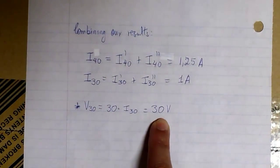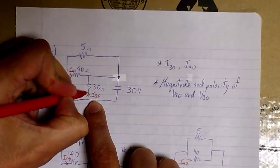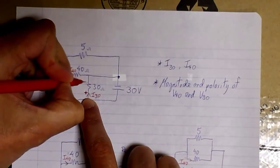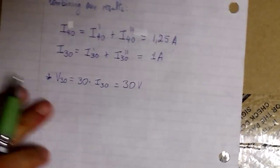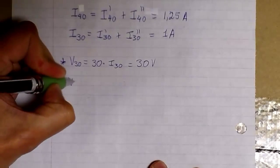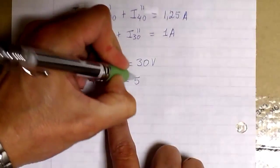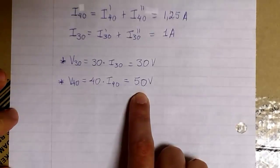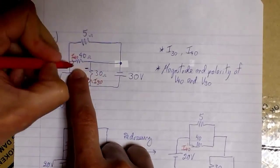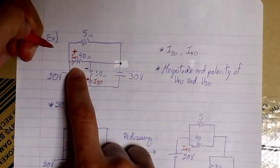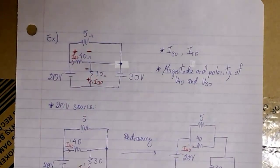Now we're looking for the voltage across 30. Applying Ohm's law: 30 ohms times I30 = 30 volts. To find the polarity, we go back to the original circuit — we have 1 amp flowing upwards through 30, so the top terminal is positive and the other is negative. For V40: 40 ohms times I40 = 50 volts. The current is flowing from left to right, entering the left terminal which is positive and leaving the right terminal which is negative. We got positive current, confirming the direction we assumed at the beginning.